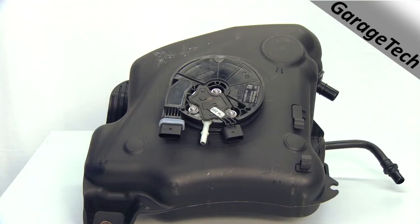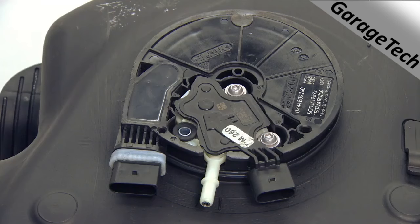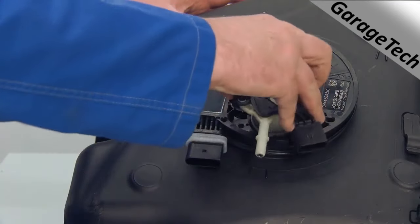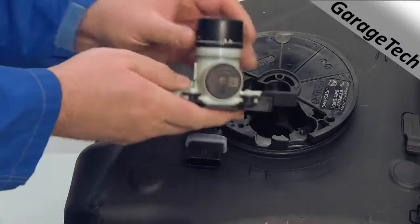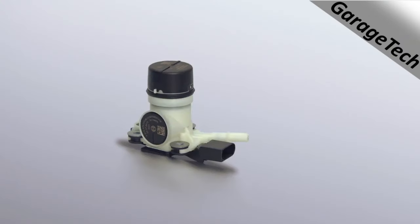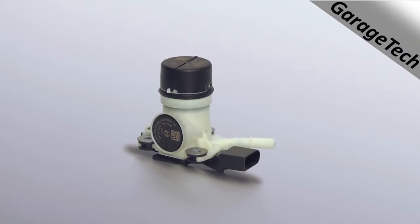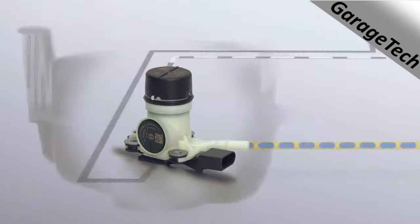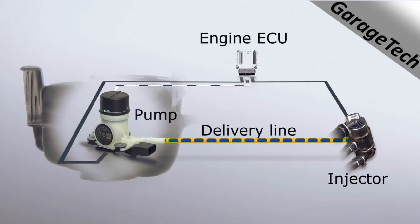The pump is located within the delivery module. It consists of two pumps — one for delivering the fluid to the injector and another for returning the fluid to the tank. The pump delivers the fluid from the tank to the injector via a heated line.